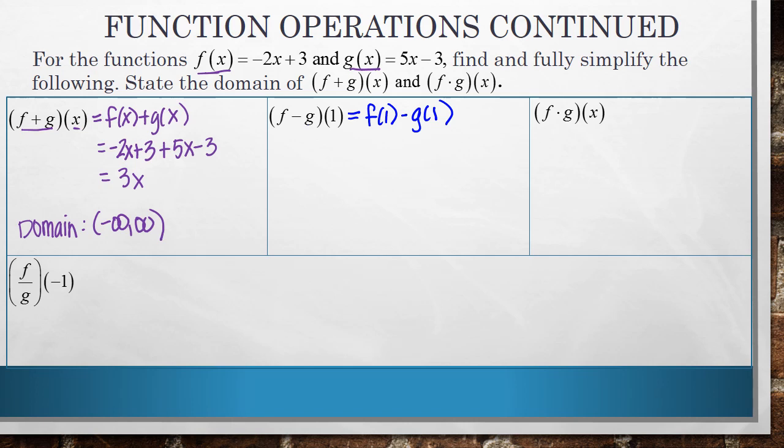So we're just subtracting those two output values. Let's figure out what f of 1 is. So f of 1, you'll plug in 1 for x. I get negative 2 times 1 plus 3.